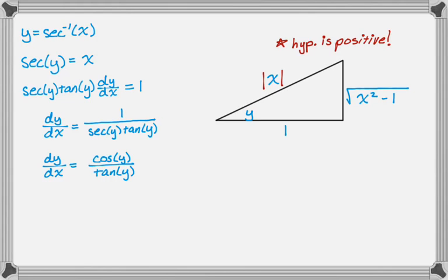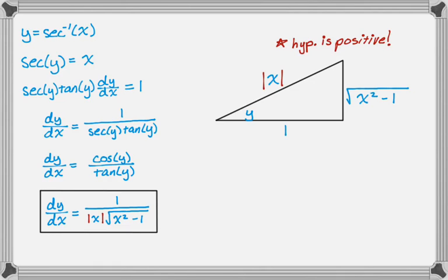Making the substitutions: cosine is 1 over |x|, and tangent is opposite over adjacent, so √(x² - 1) over 1. Therefore dy/dx equals 1 over (|x| · √(x² - 1)), and that is the simplified derivative of inverse secant.